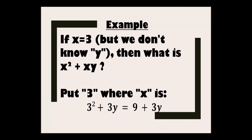Next example: if x equals 3 but we don't know y, then what is x² plus xy? We will put only 3 instead of x. So 3² plus 3y, that is 9 plus 3y. We will not substitute y because we don't know the value of y.